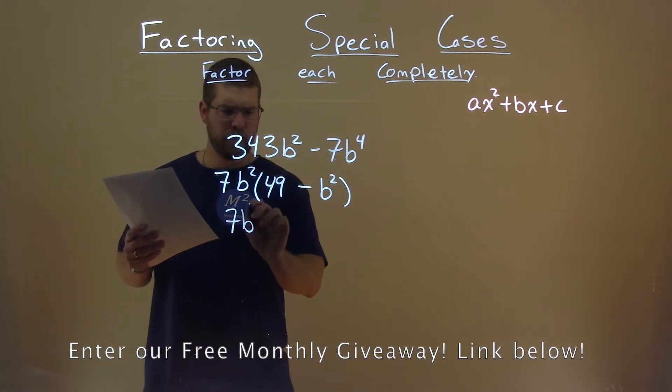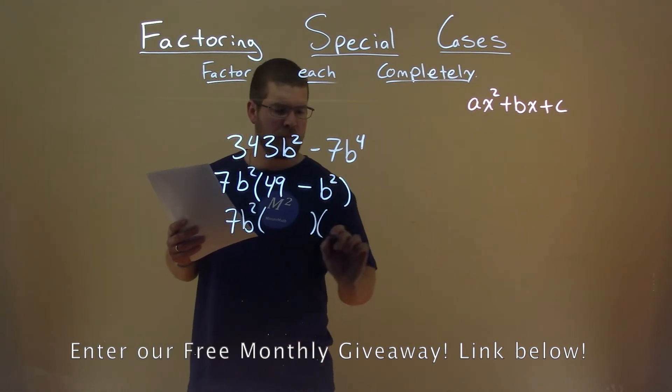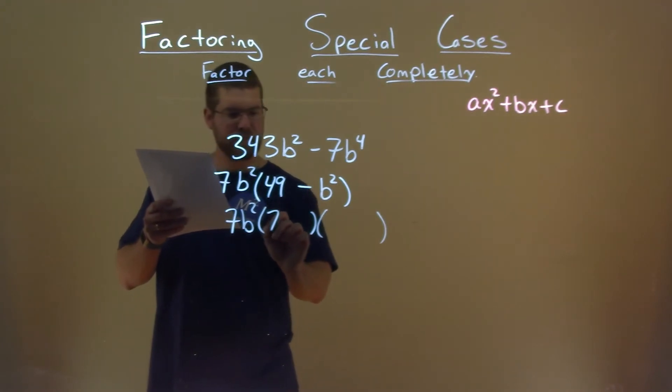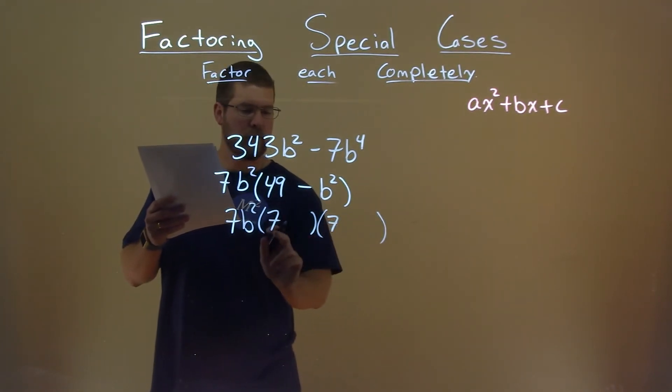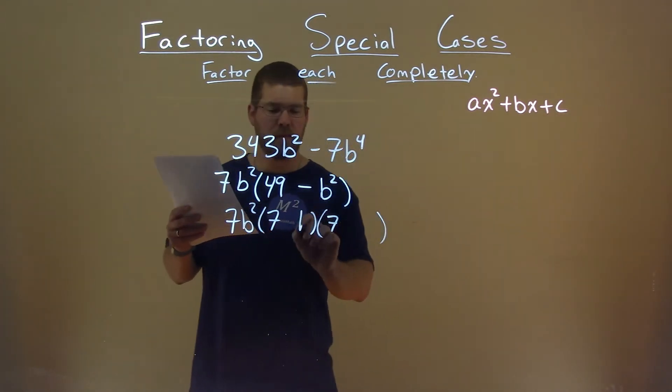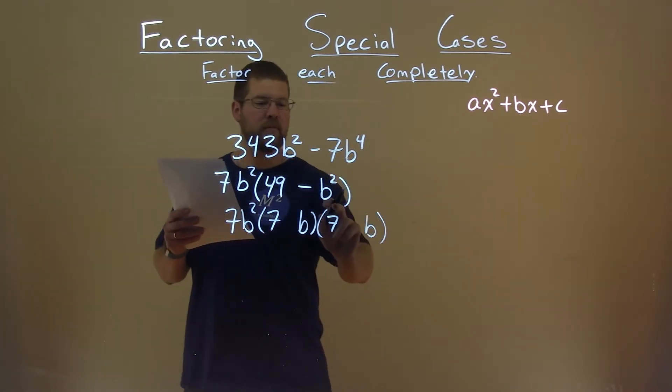So I'm bringing down the 7b squared, but I'm now going to write it in some form like this. Square root of 49 is 7. 7 of both parts here, 7 times 7 is 49. Square root of b squared is b, b and b. b times b is b squared, but we want to minus b squared.